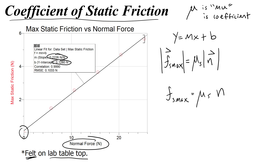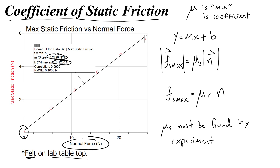The other important thing to note about the coefficient of static friction — and really all coefficients of friction — is that it must be found experimentally. There is no way to theoretically determine what the coefficient of friction between two surfaces is going to be. You have to set up a lab and find out what it is.